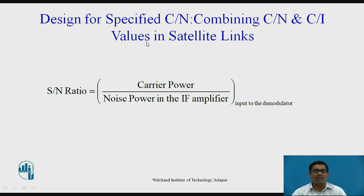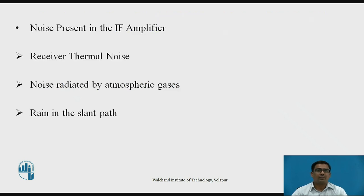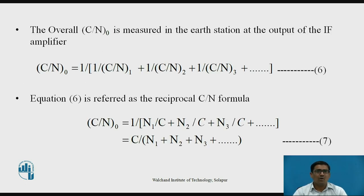Design for specified C/N, that is combining C/N and C/I values in satellite links. C/N ratio is defined as the ratio of carrier power to noise power in the IF amplifier at the input to the demodulator. The overall C/N measured in the Earth station at the output of the IF amplifier is C/N = 1 / (1/(C/N)_1 + 1/(C/N)_2 + 1/(C/N)_3 + ...).